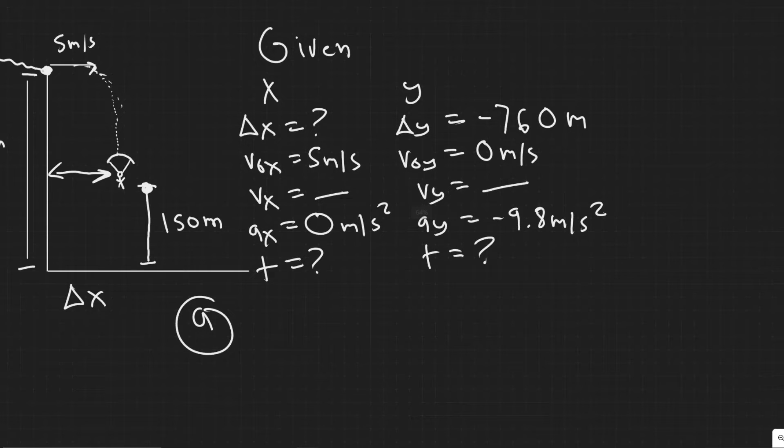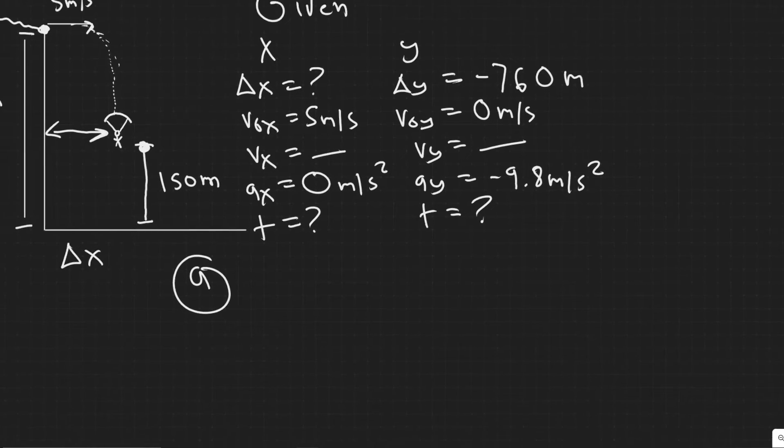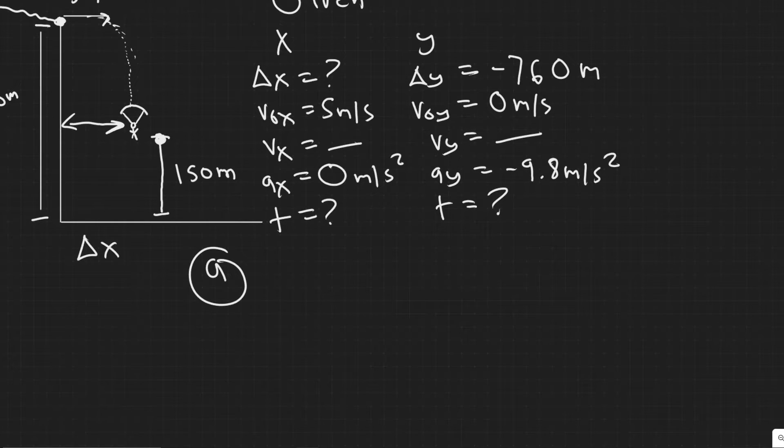Now we've got this. What we need to do is solve for time. In order to solve a kinematic equation, you need to have three variables in order to solve the equation. If you look in the Y here, we have three variables, meaning what we can do is solve for T, since all we need is just those three. We're going to choose one of the kinematic equations that fit these requirements.